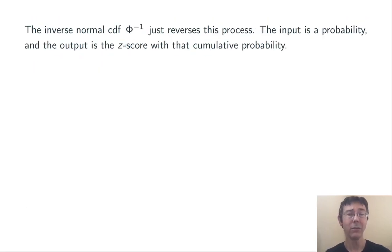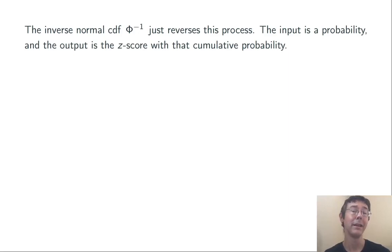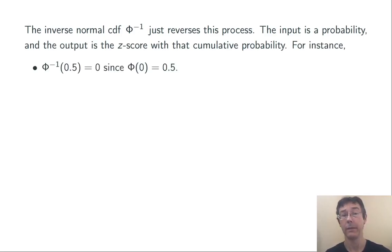Now the inverse normal CDF, phi inverse, just reverses this process. Instead of feeding it a z-score and getting back a probability, we feed it a probability and get back a z-score — specifically, the z-score that has that cumulative probability.